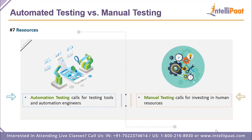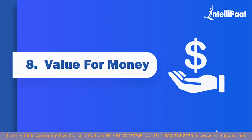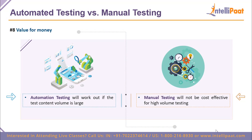Regarding resources, both approaches require significant investment. Automation testing requires testing tools and automation engineers. Manual testing requires investing in more human resources — training people and having them understand the software before testing. For value for money, automation testing works best when the content being tested is large in volume. Manual testing is not cost-effective for high-volume repetitive testing, as the human resource investment becomes a major concern.